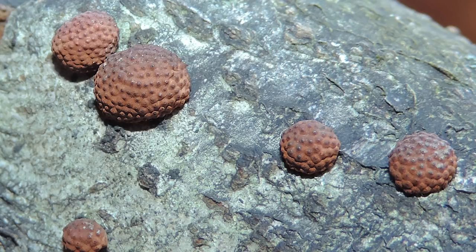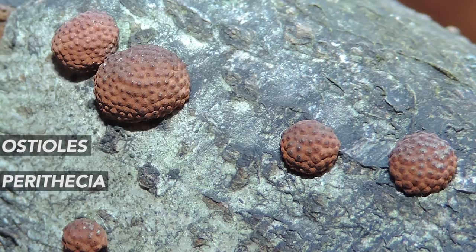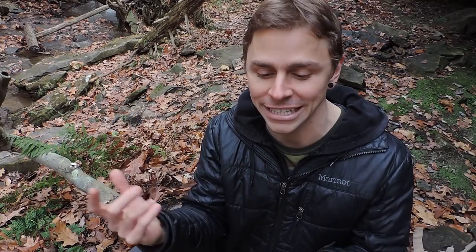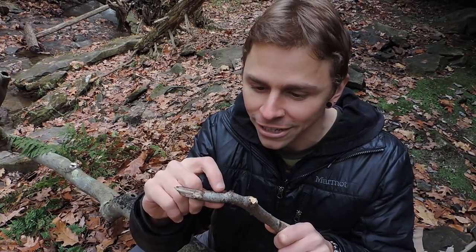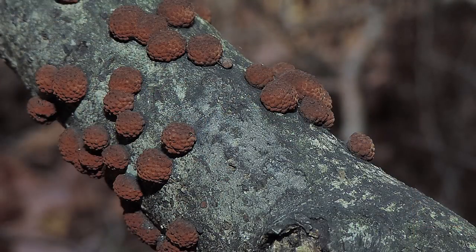What are those dots? They're mycologically known as ostioles. These are the ends of perithecia, which are flask-shaped structures that are inside these balls. If we would cut them open, we would see these flask-shaped structures. Within the perithecia are spores known as ascospores, and they're shot out of those ostioles — those little porous openings at the end of the perithecia.